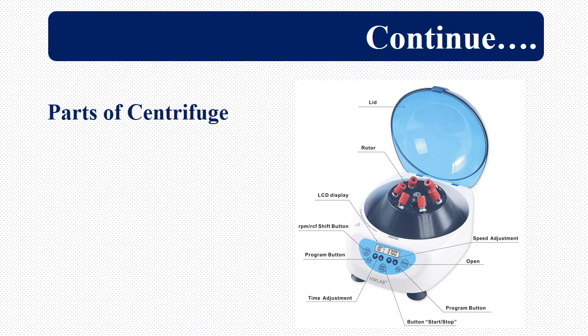Parts of Centrifuge: Centrifuge has lid and rotors which are continuously in the moving stage and then we have LCD display, on which you can set the speed, RPM, and timing of the rotation of the rotors of the centrifuge. On the LCD display, we have RPM Shift-button, we have programming button, we have time adjustment button, and we have the start stop button.